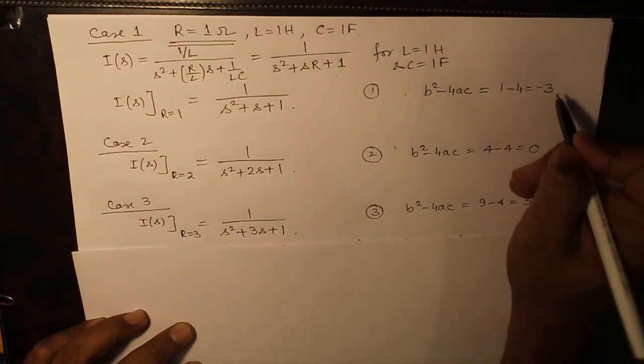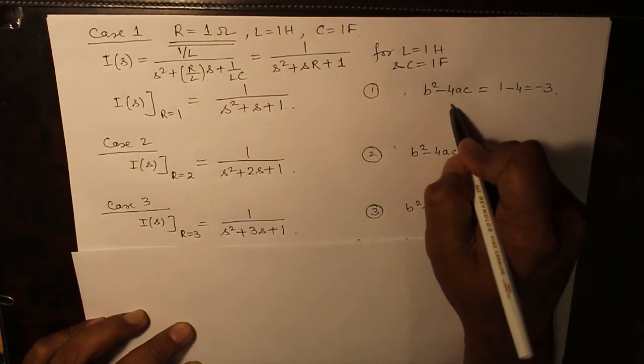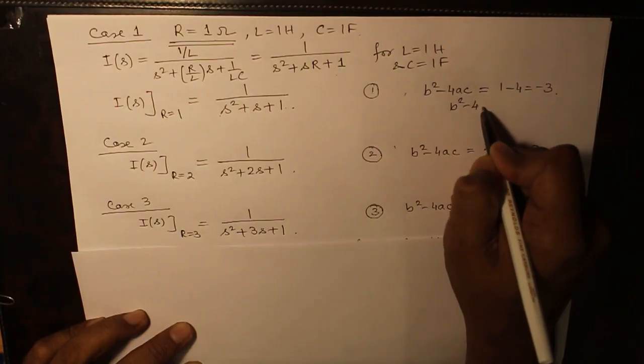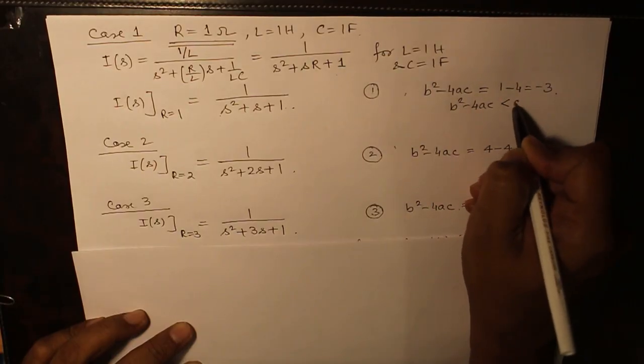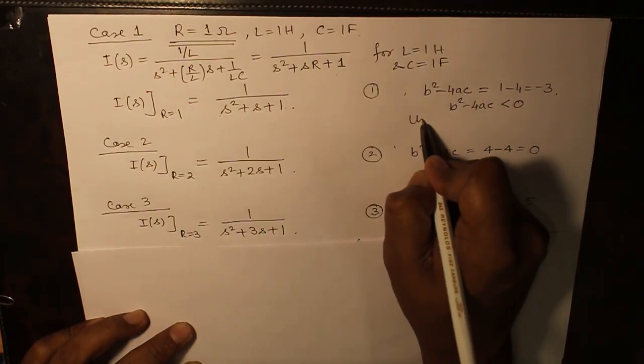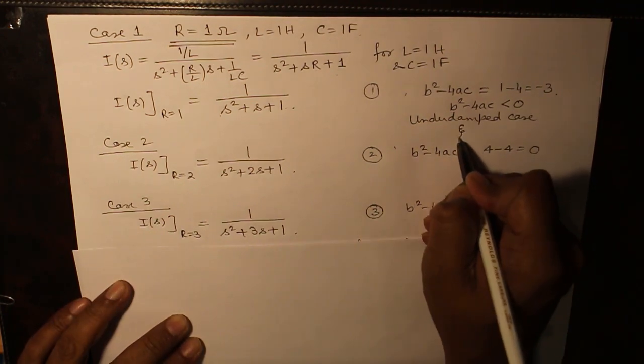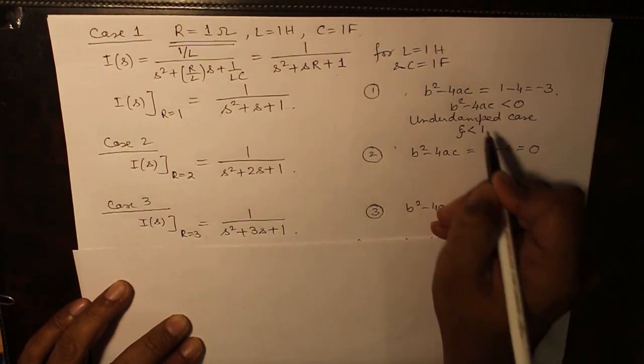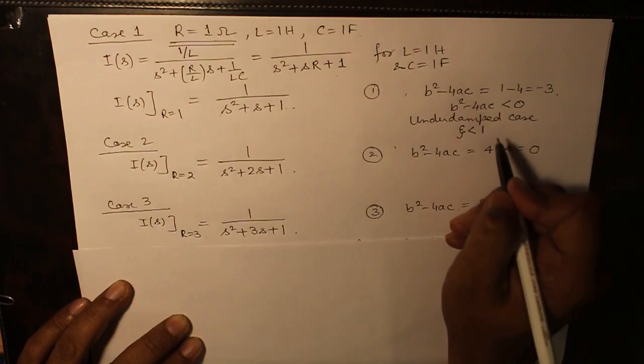As we know, if B² minus 4AC is less than 0, it is underdamped case. Damping coefficient is less than 1. Later on, I will tell you what is damping coefficient.